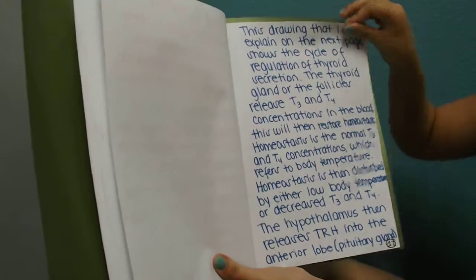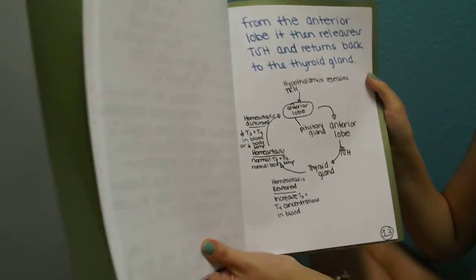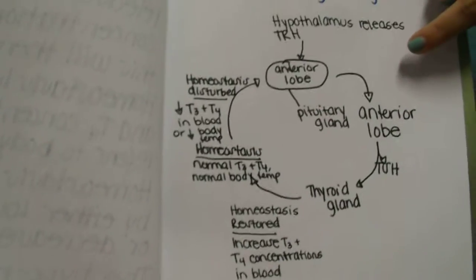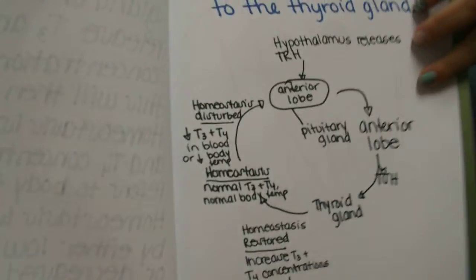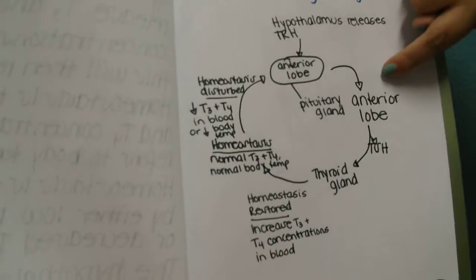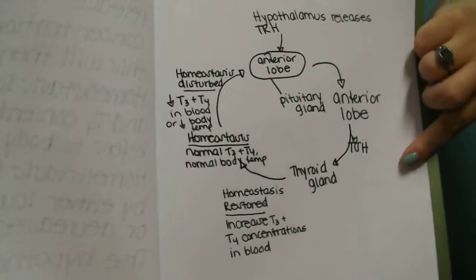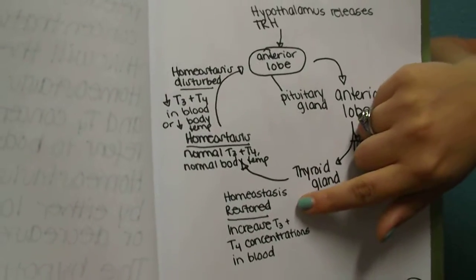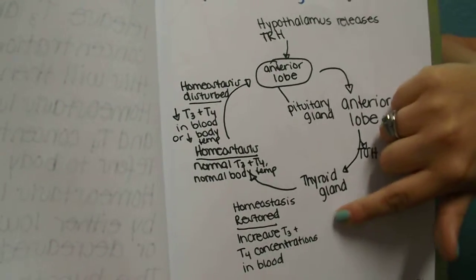So the drawing on this next page, I'm going to explain to you by showing instead of the words. So here, we start with the hypothalamus releasing TRH of the anterior lobe, which is the pituitary gland. After this happens, it goes down to the anterior lobe, releasing TSH into the thyroid gland. Through this, homeostasis is restored, which increases T3 and T4 concentrations inside the blood.